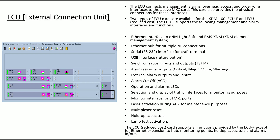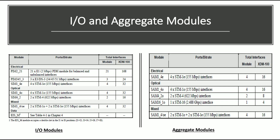The ECU reduced card supports all functions provided by the ECUF except for the Ethernet expansion hub, monitoring port, hold-up capacitors, and alarms in/out. The input-output modules and aggregate module cards include different card types, with the total interfaces and maximum number of ports listed accordingly.